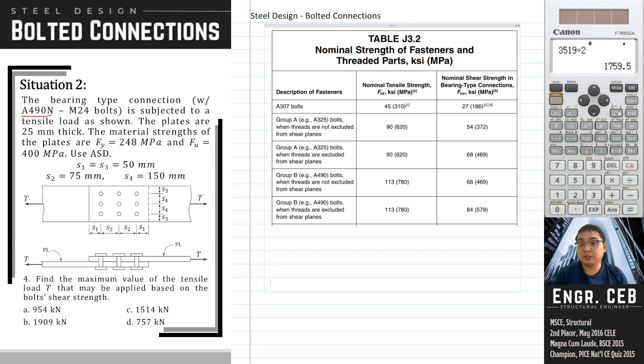Therefore, the bolts that we are looking for is A490N threads not excluded. So here it is and the corresponding F sub NB is 469 MPa. We can now compute the nominal shear strength of one bolt.